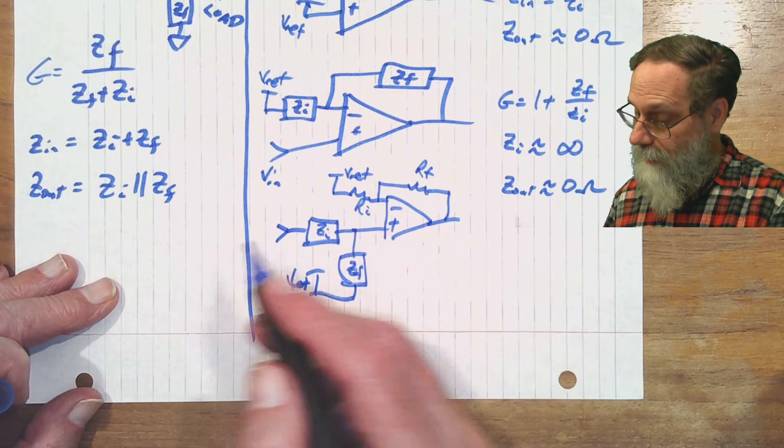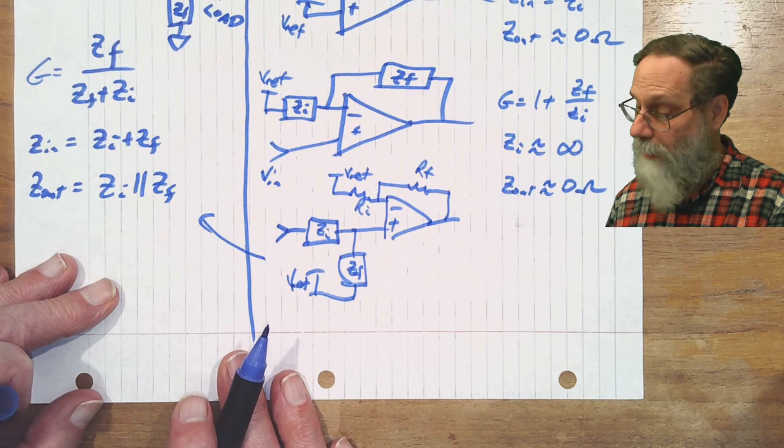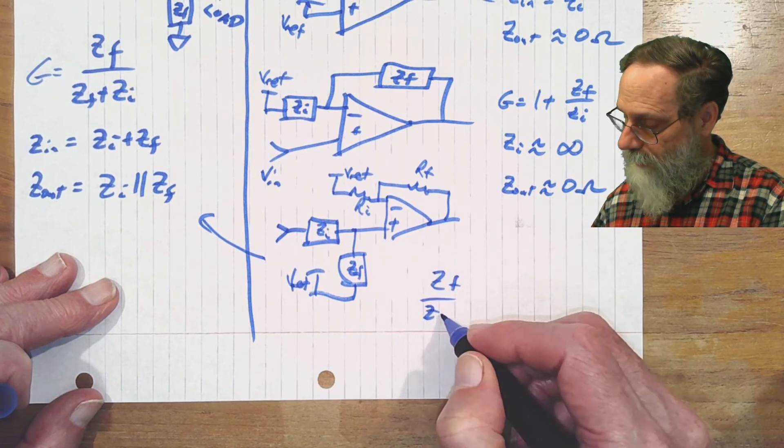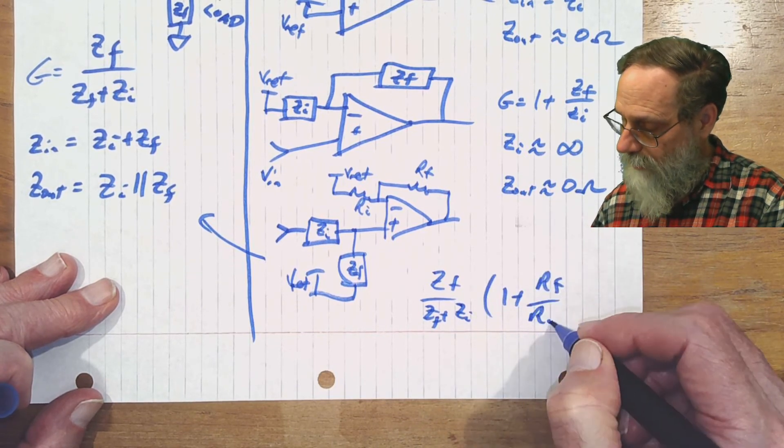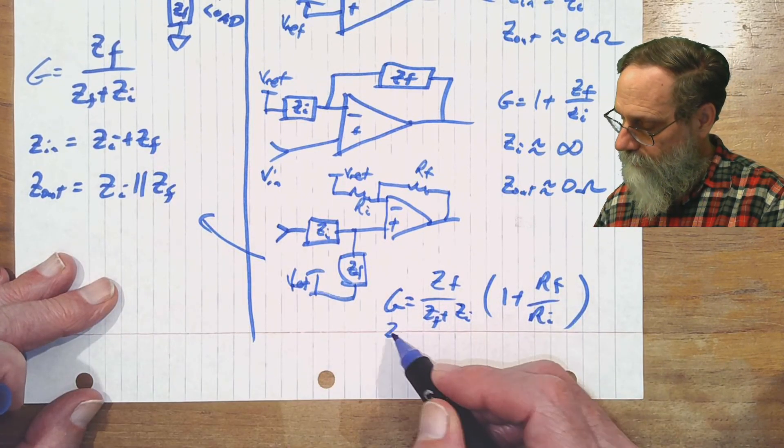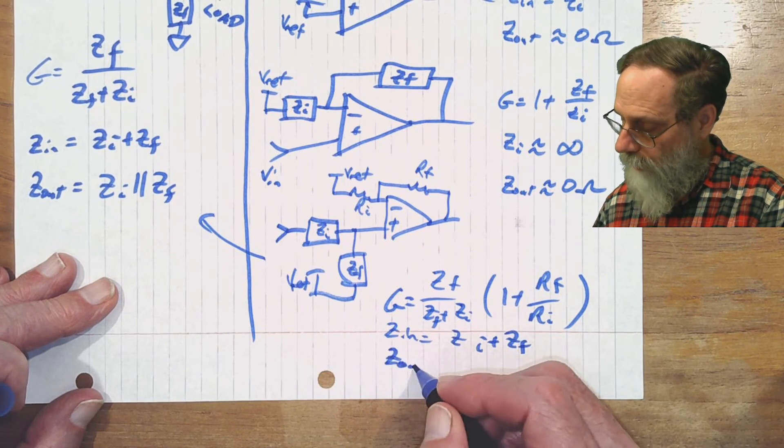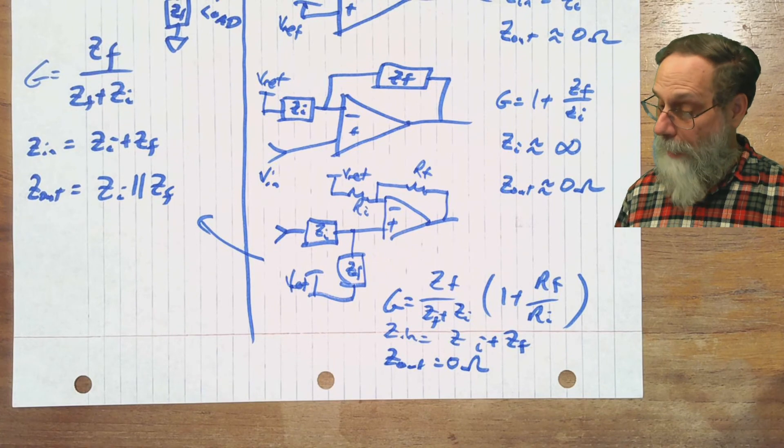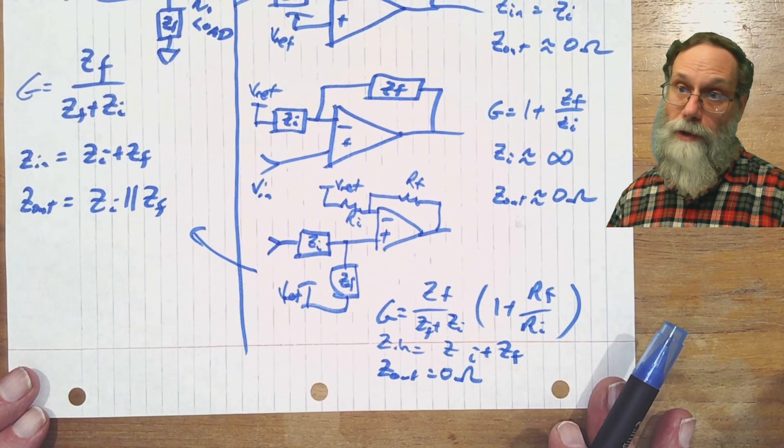And so we do indeed get the passive properties in terms of the gain, except our gain is now multiplied by, so we have the ZF over ZF plus ZI, times one plus RF over RI as the gain. And Zin is the same as before. And Zout from this whole thing is now approximately zero ohms.